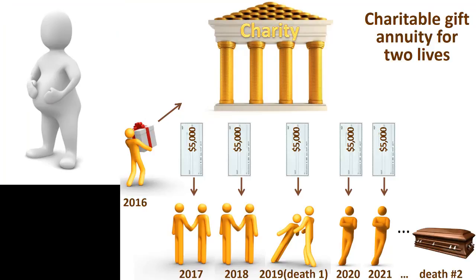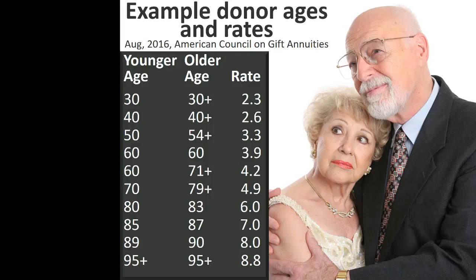Nor can it pay for the life of someone who is not yet born. For example, it cannot pay for my life and the life of my first child if he or she is born before my death. The American Council on Gift Annuities also issues suggested rates for these two-life annuities. As before, these rates vary depending upon prevailing interest rates and the ages of the two annuitants. The full table is much larger than for single gift annuities, given the wider range of age combinations possible. This excerpt provides a few examples from that table.